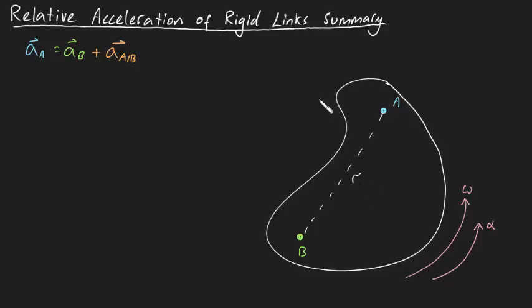From the perspective of B, A can only sweep out a circular path. And this means that the acceleration of A relative to B will have two components.